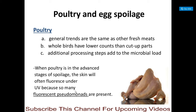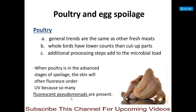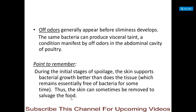For poultry spoilage, trends are generally the same as other fresh meats. Whole birds have lower counts than cut-up parts, and additional processing steps add to the microbial load. When poultry is in advanced stages of spoilage, the skin will often fluoresce under ultraviolet light due to fluorescent Pseudomonas bacteria. Off-odors generally appear before sliminess develops, and bacteria can produce visceral taint with off-odors in the abdominal cavity.